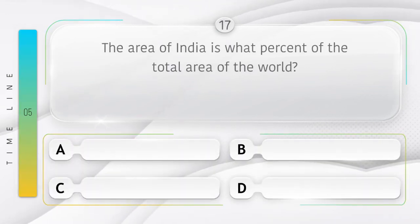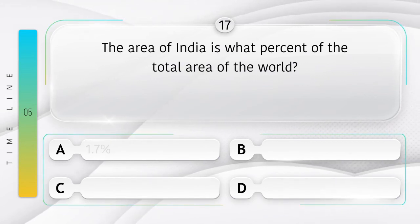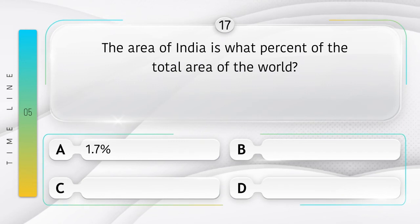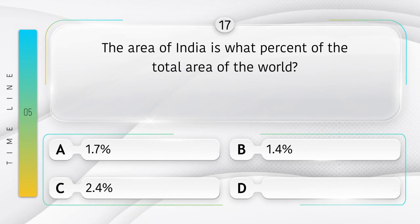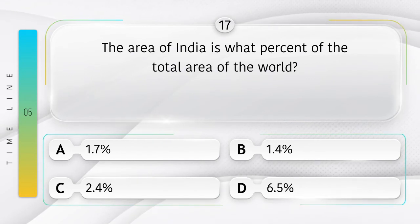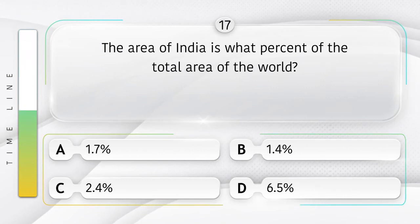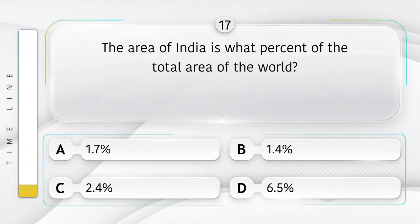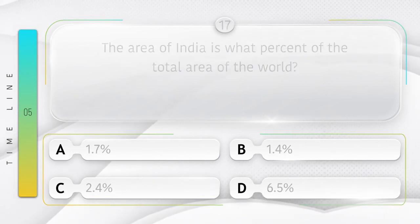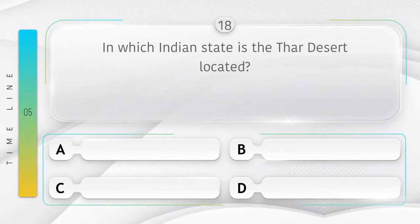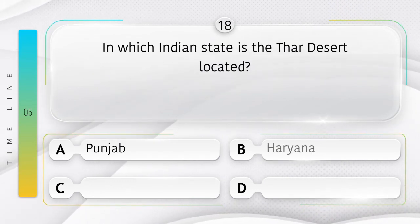The area of India is what percent of the total area of the world? Option A: 1.7%, B: 1.4%, C: 2.4%, D: 6.5%. Answer is option C: 2.4%.